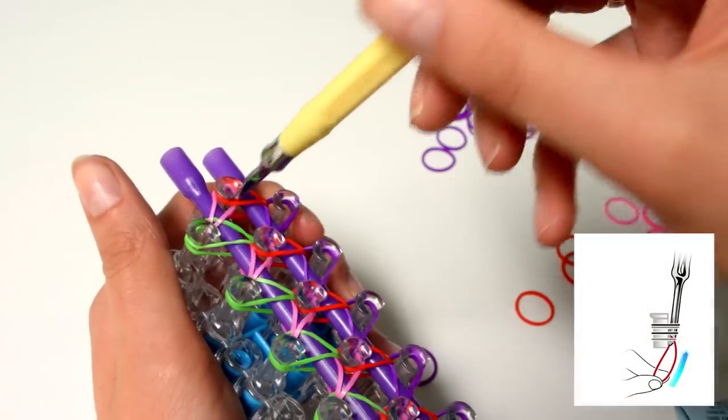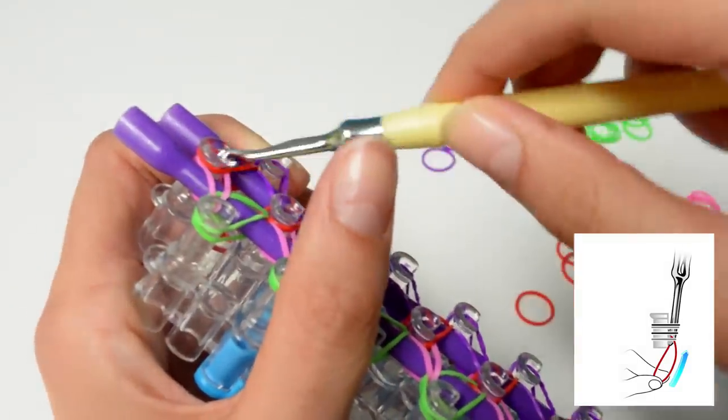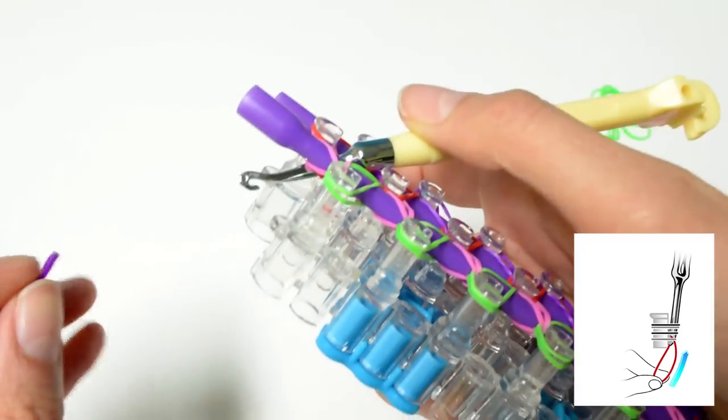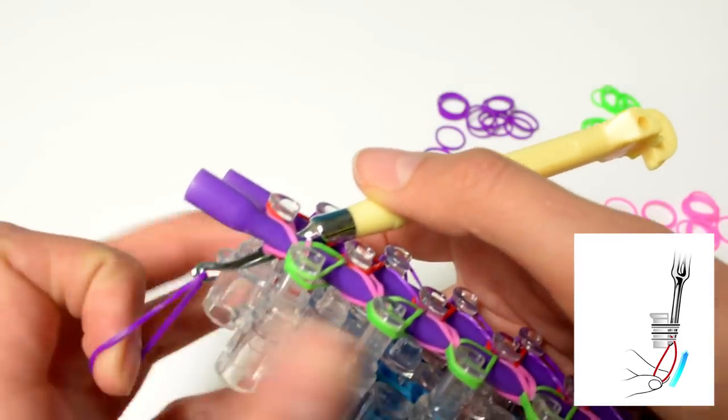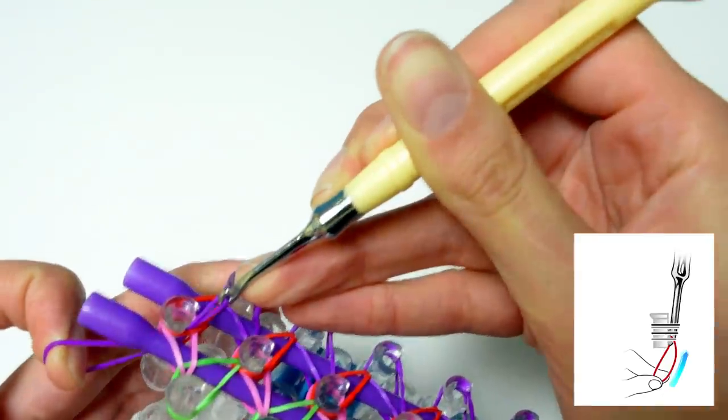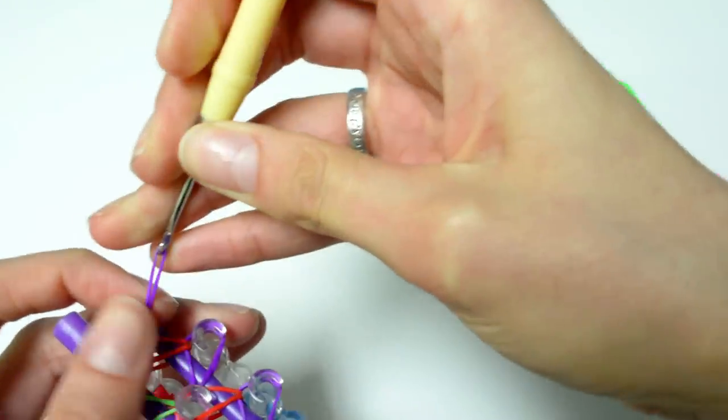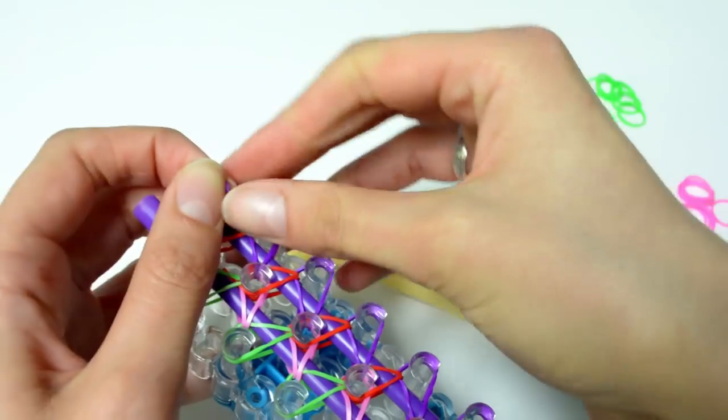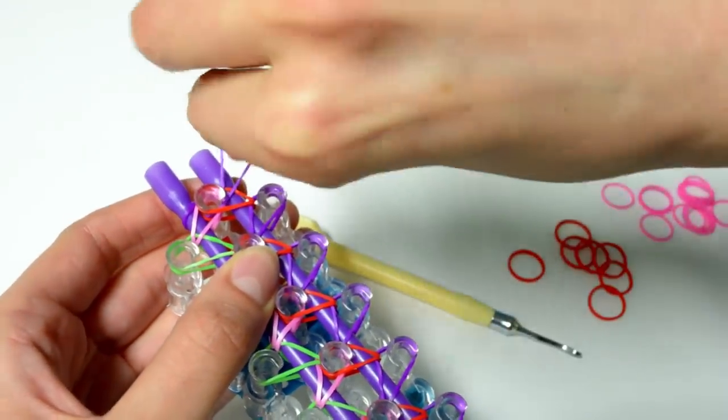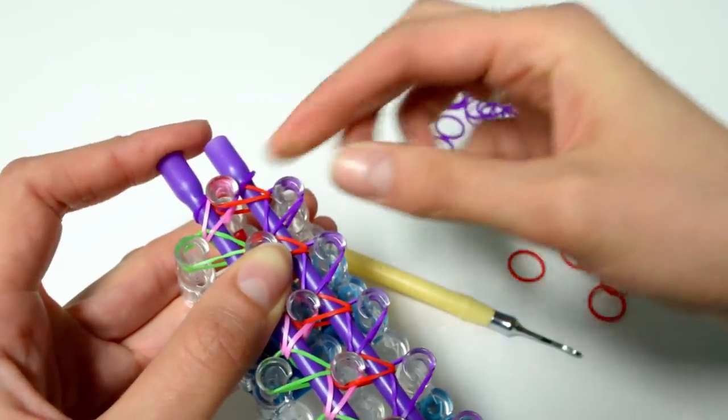Now that we're done, we're going to stick our hook through all of the bands on the last peg. Holding a new band, hook one end and stretch it through the pin. Loop one end over the extension rod, and loop the second half on the second extension rod.